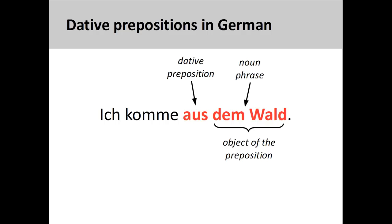In an earlier presentation, we saw that dative prepositional phrases consist of a dative preposition and the object of that preposition. Here, the object of 'aus' is the noun phrase 'dem Wald,' with the definite article 'dem' indicating the dative case. We also learned that there is no reason why these prepositions take a dative object — they simply have to be memorized.